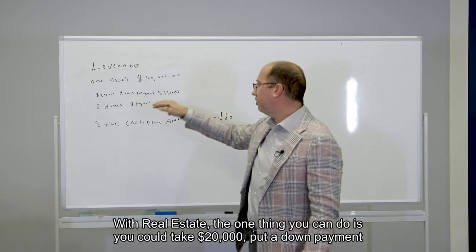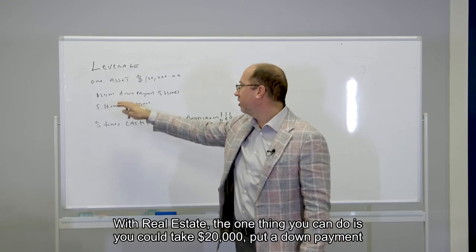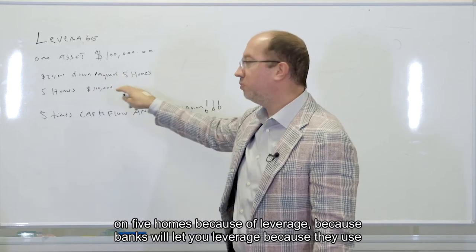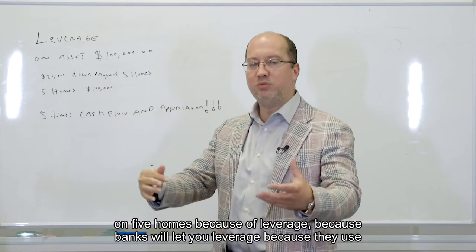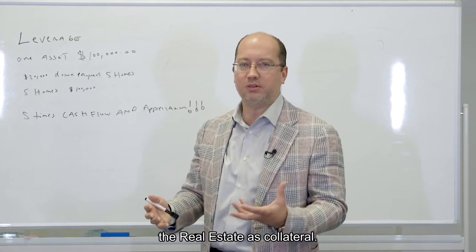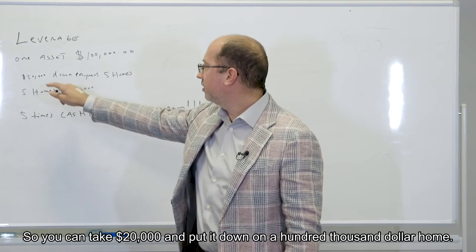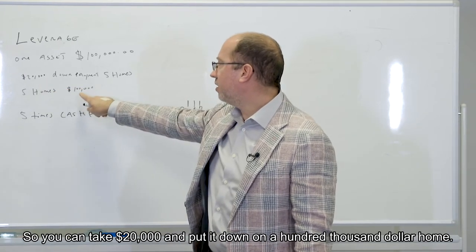With real estate, the one thing you can do is you can take twenty thousand dollars, put a down payment on five homes because of leverage, because banks will let you leverage because they use the real estate as collateral. So you can take twenty thousand dollars and put it down on a hundred thousand dollar home.